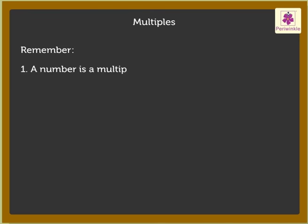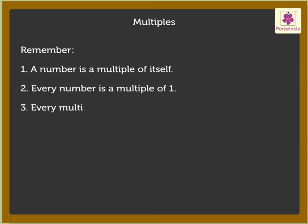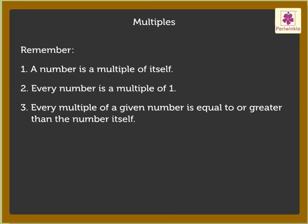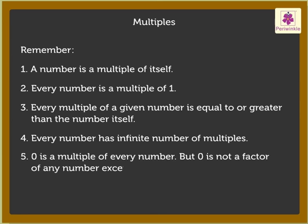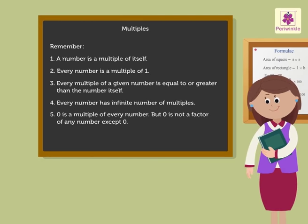Remember, a number is a multiple of itself. Every number is a multiple of 1. Every multiple of a given number is equal to or greater than the number itself. Every number has an infinite number of multiples. 0 is a multiple of every number, but 0 is not a factor of any number except 0. Revising factors and multiples was fun.